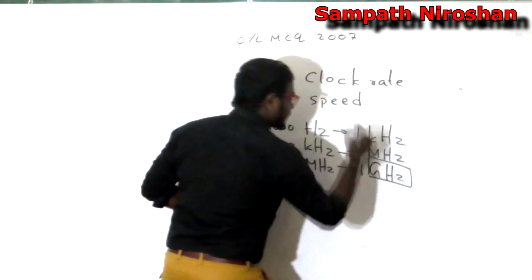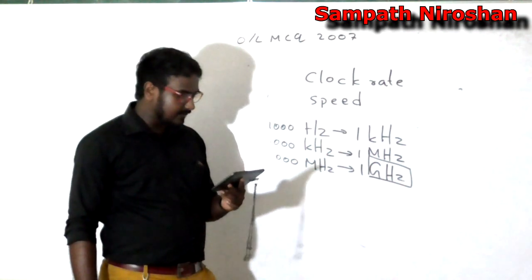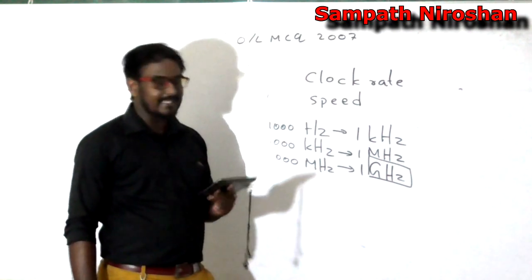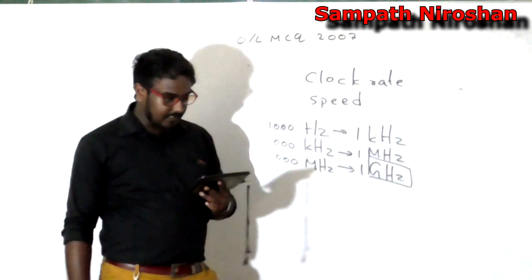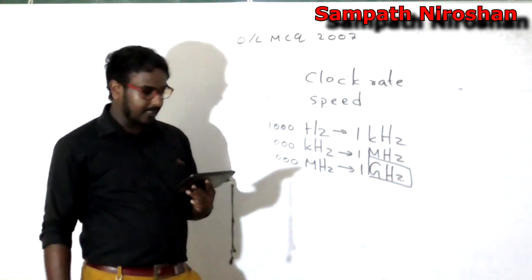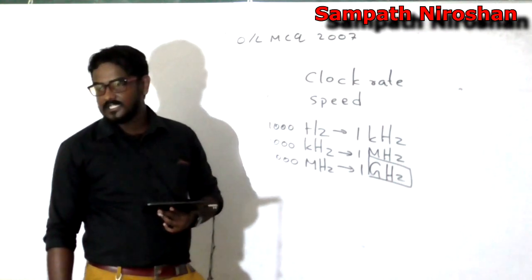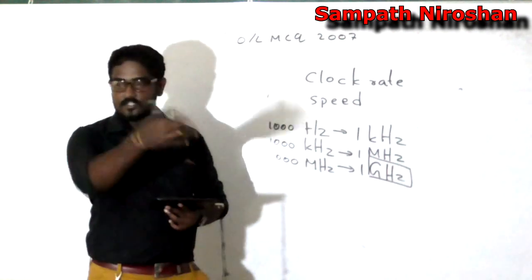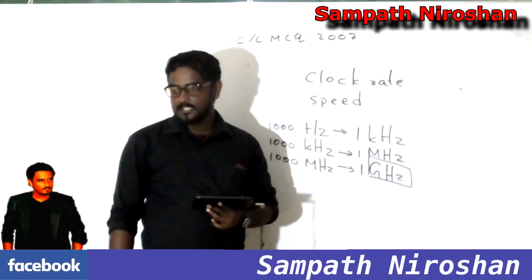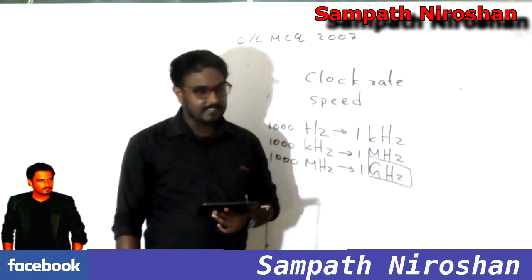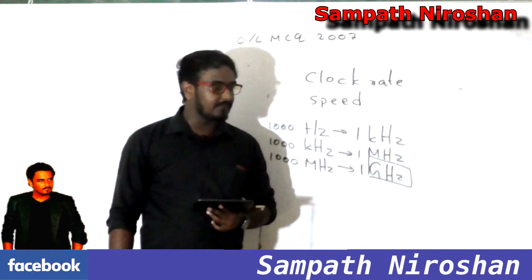The first answer says gigahertz — that's the correct answer. The second answer says megabits per second, which is used to measure the speed of networks and data transmission. Gigabytes is a measure for storage. IPS — instructions per second — was used up to a certain extent in history, until the second generation ended. First generation computers used 50,000 IPS to 150,000 IPS.